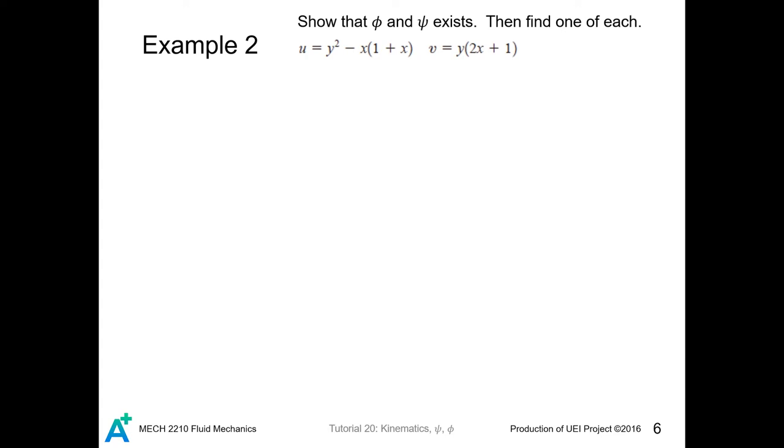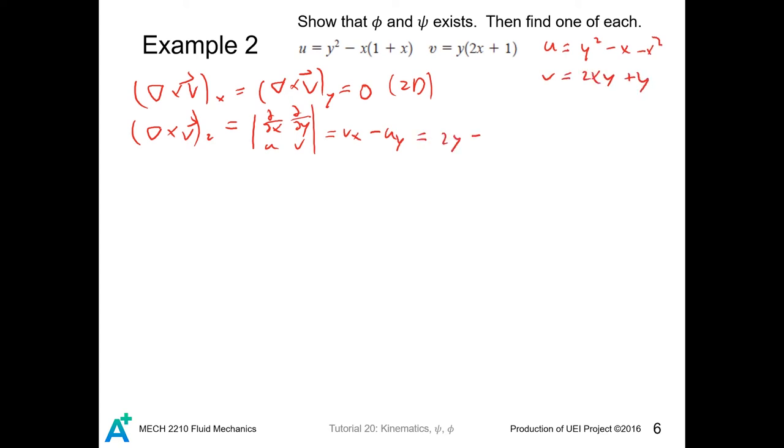Now we work on an example about stream function and velocity potential to show their existence. We have to compute the divergence and the curl. So let's start working. Since the flow is 2D, the x component and the y component of the curl goes to zero, and for the z component, it is equal to this determinant. And for convenience, let's expand u and v. So this one exists.